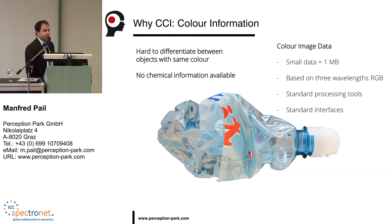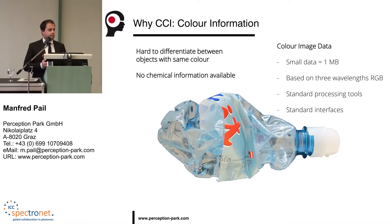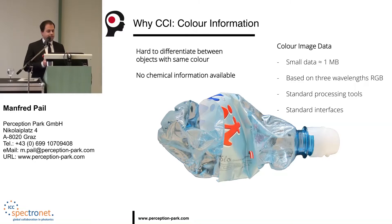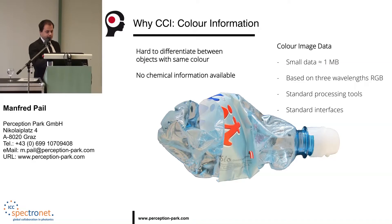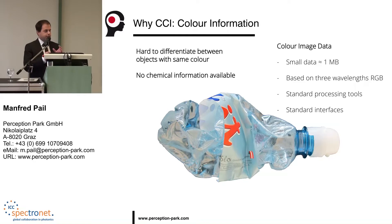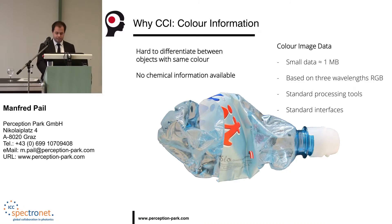But why do we need chemical color imaging? Here we see a color image of a plastic bottle. It is small data, about one megabyte, and you have several standard processing tools to handle this data. Of course you have standard interfaces — GigaVision, camera link and others. But we can see here this paper label on this bottle — it's a blue label on a blue bottle. It's really hard to differentiate from the plastic, because there is no chemical information in this image.